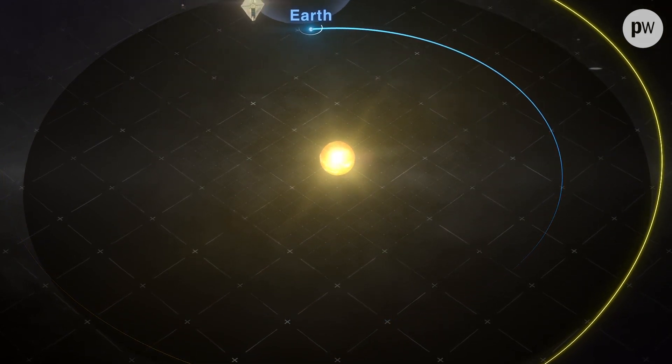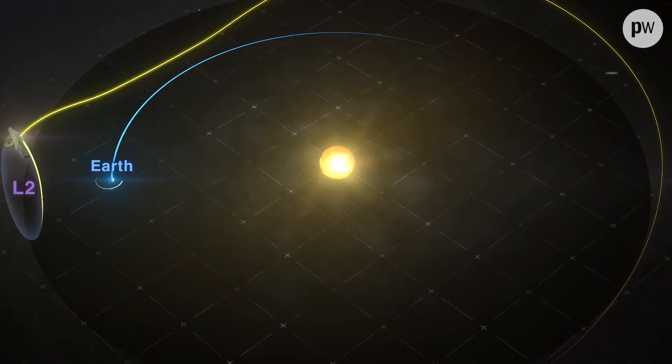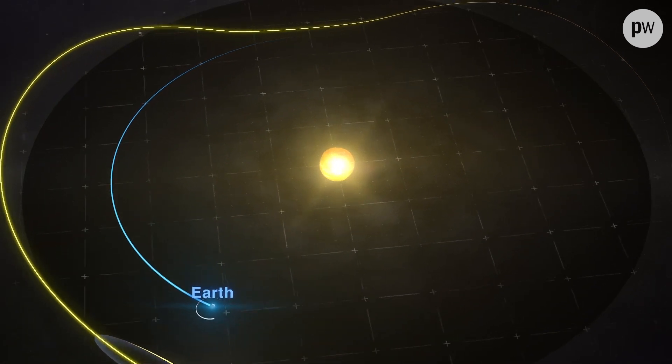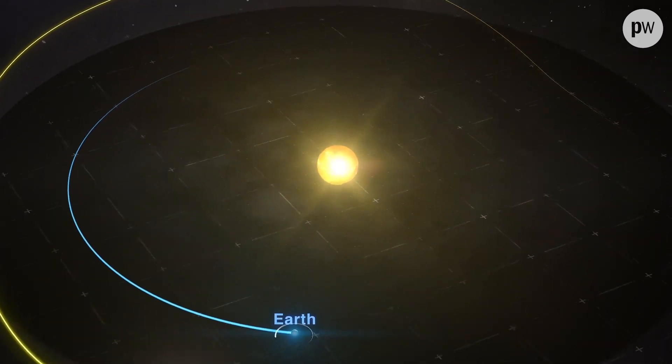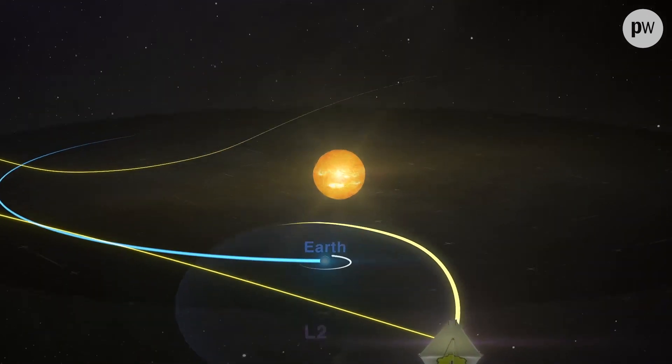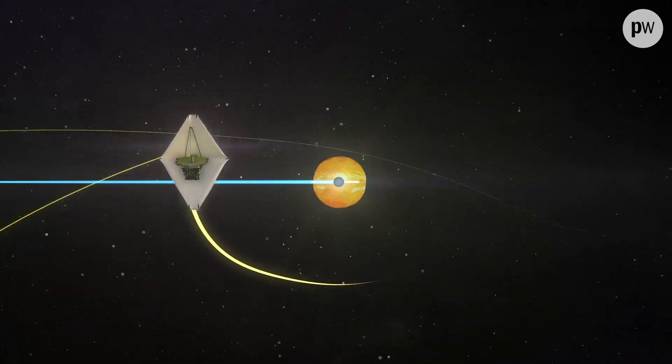JWST will be 1.5 million kilometers away, captured within the L2 Lagrange point. This orbit lets the telescope stay in line with the Earth as it moves around the Sun.